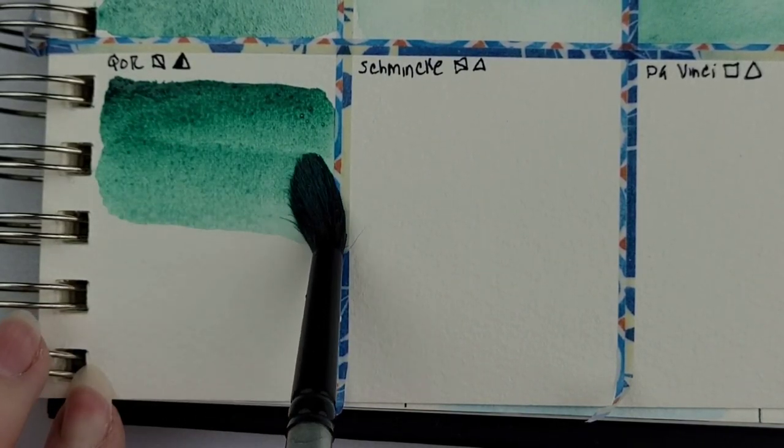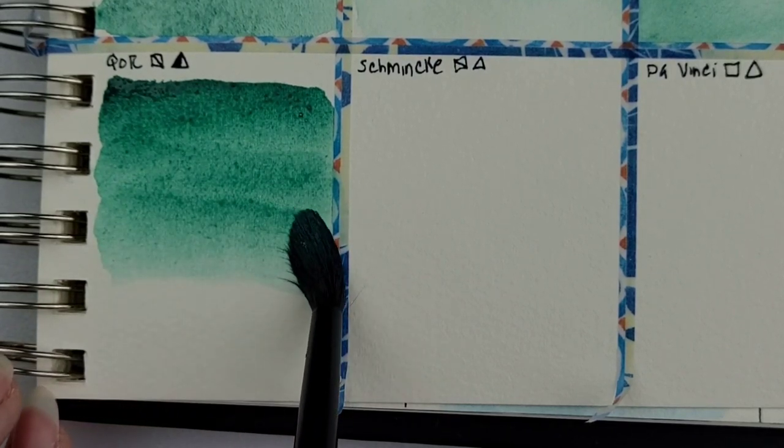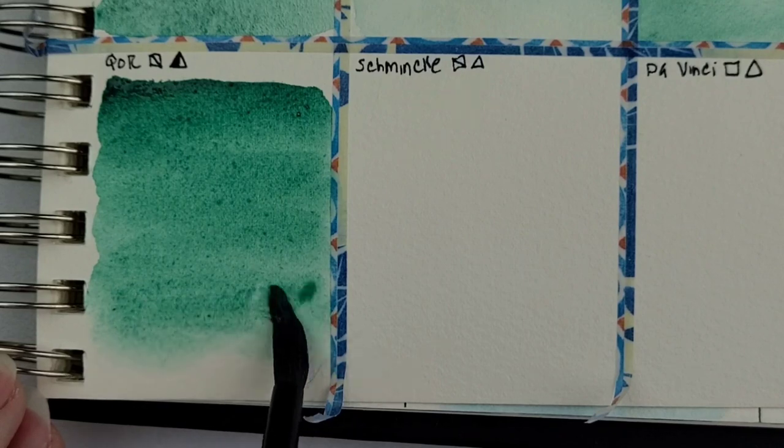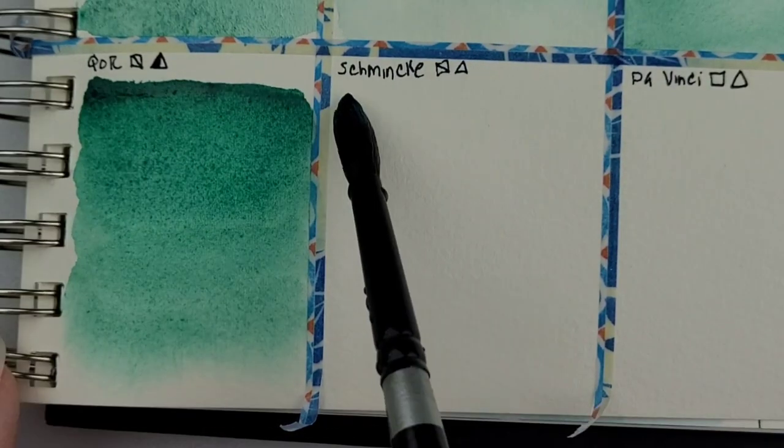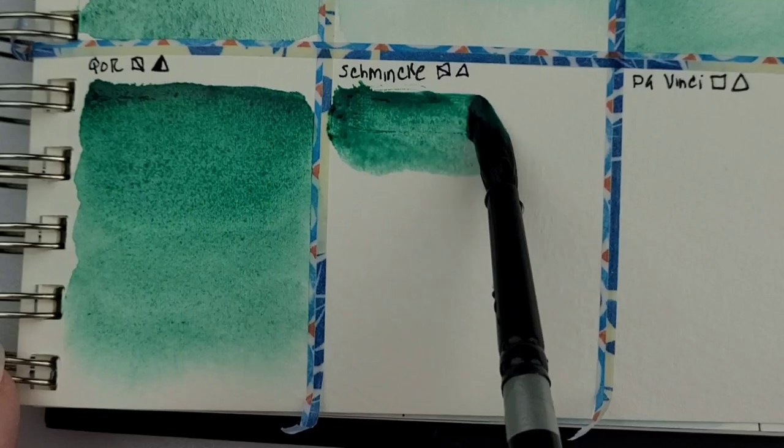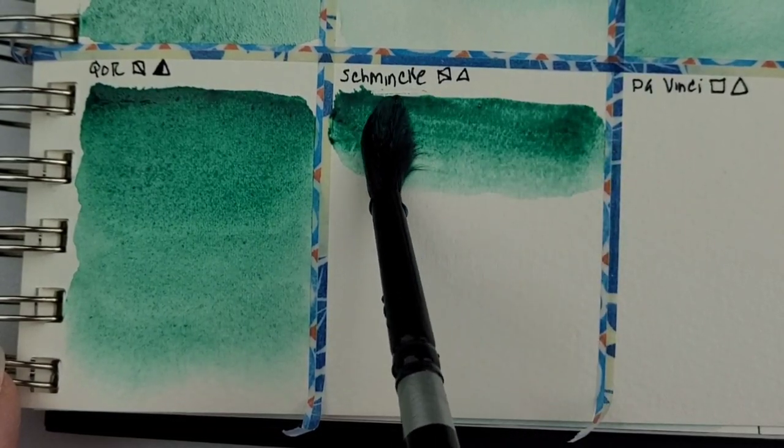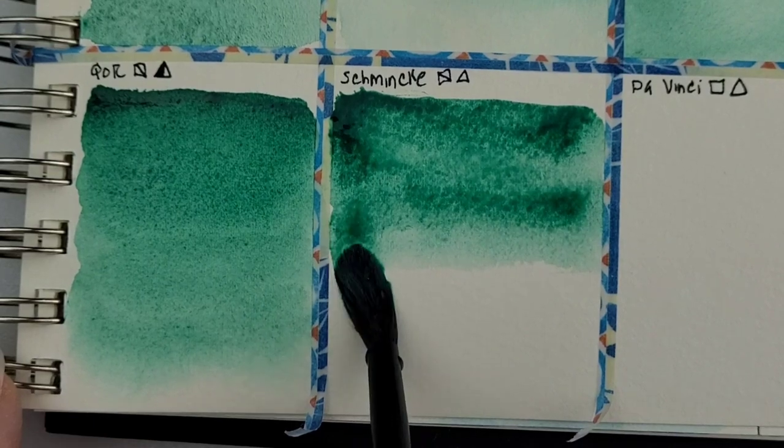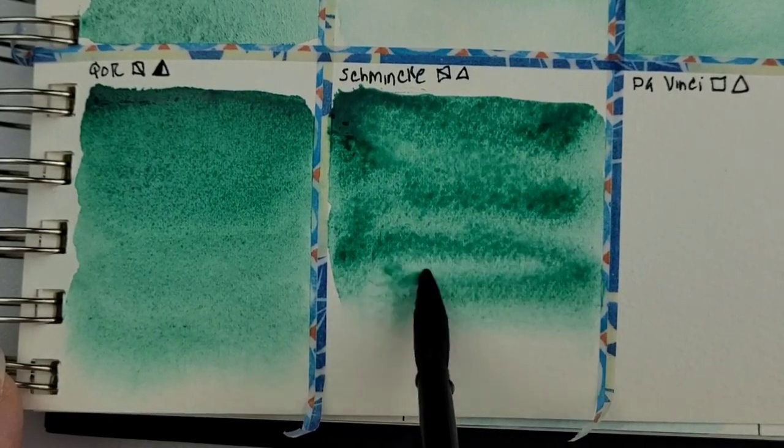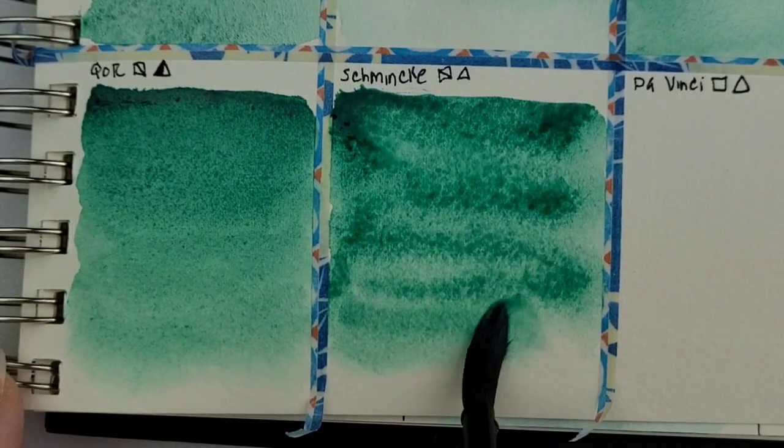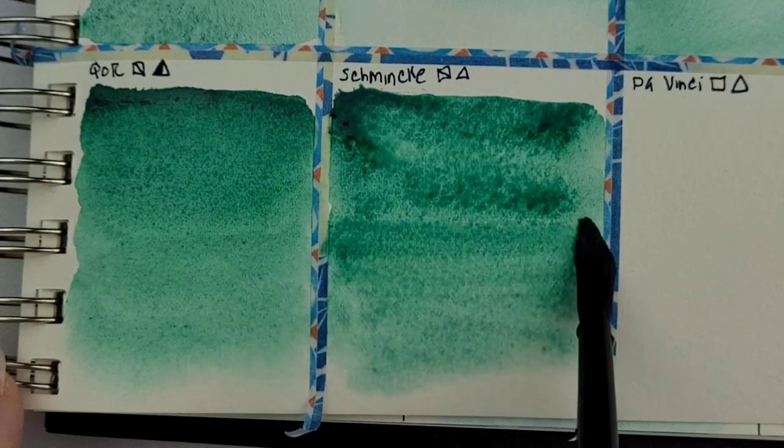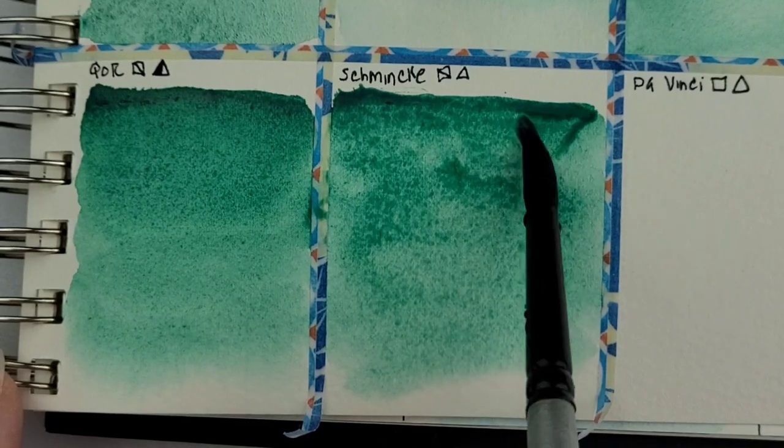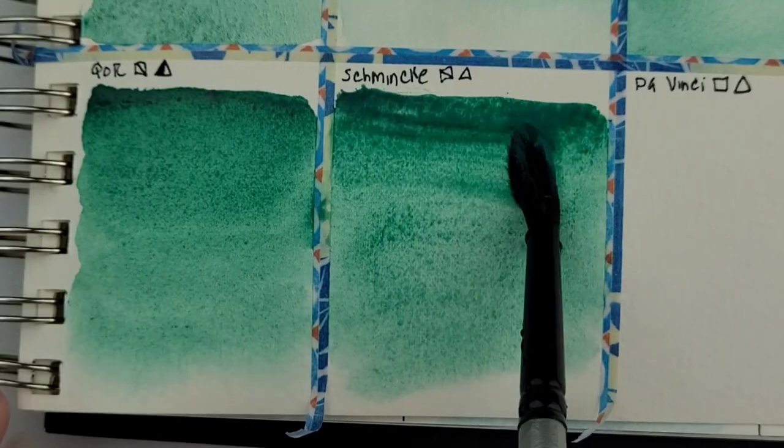All the ones we've looked at so far up until Core were both transparent and non-staining. Core is semi-transparent and semi-staining, but it also is very, very dark. It's really concentrated. But when we do the mass tone later, what I noticed was it is slightly less concentrated than Winsor and Newton. But they kind of tie head to head there.